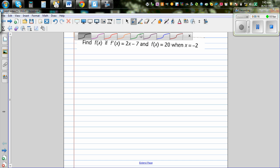So here the question is find f(x) if f'(x), which is a gradient function, is 2x minus 7, and it has been given that f(x) is 20 when x is negative 2.